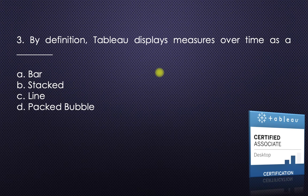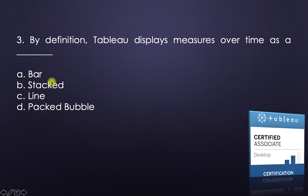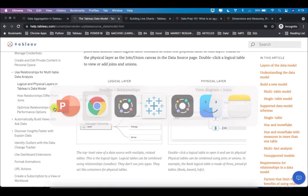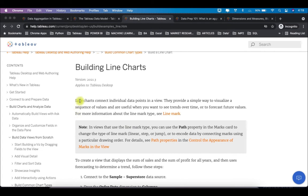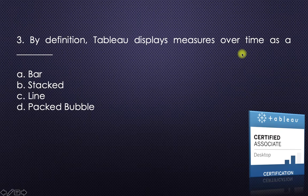The third question: by definition, Tableau displays measures over time as a dash. A packed bubble chart is definitely not the default, and bar or stacked bar charts don't apply here either. On help.tableau.com, searching 'building line charts' shows that line charts provide a simple way to visualize a sequence of values and are useful when you want to see trends over time. So the answer is line chart.